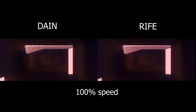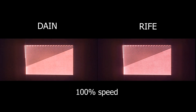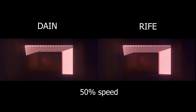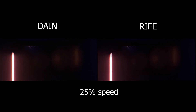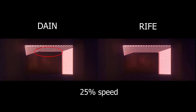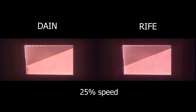The most obvious difference can be spotted here in this video interpolation comparison. As you can see, DAIN generates artifacts which shows it has trouble interpolating new frames, while RIFE does not.